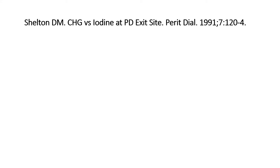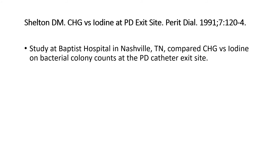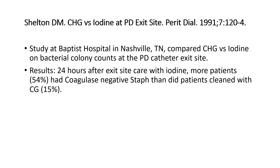The same has been shown for peritoneal dialysis catheter exit site care. A study done at Baptist Hospital in Nashville, Tennessee compared chlorhexidine versus iodine on bacterial colony counts at the PD catheter exit site. After 24 hours of exit site care with iodine, 54% of patients had coagulase-negative staph growing at the site compared to only 15% of those treated with chlorhexidine. Clearly chlorhexidine is the way to go for not only hemodialysis care but also peritoneal dialysis.